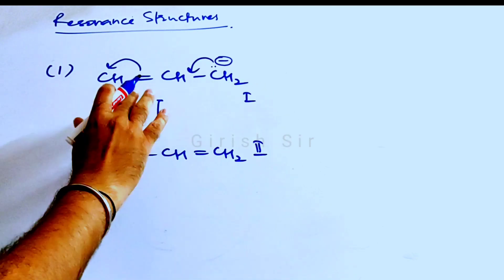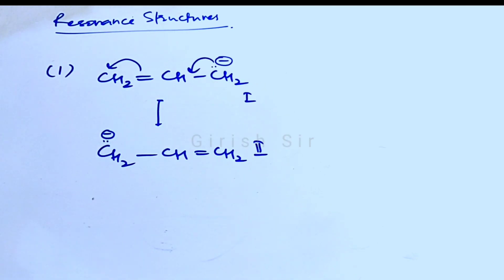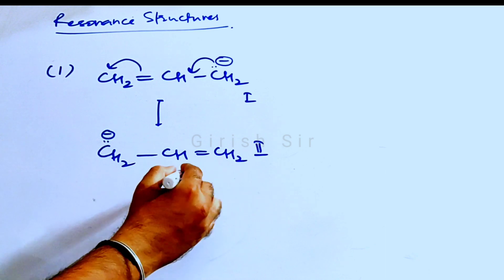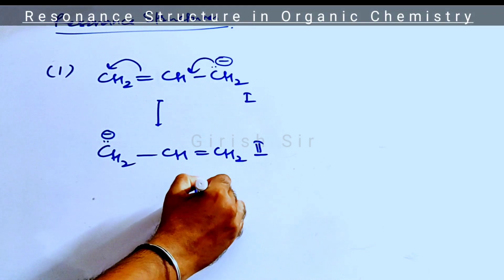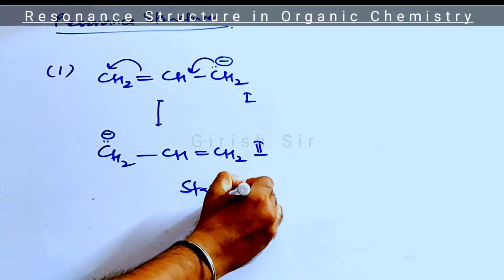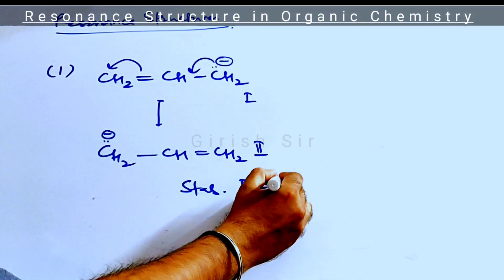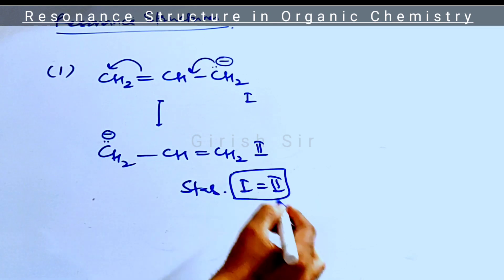If you look carefully, they look identical. If they look identical, they must have equal stability. So the stability of these two resonance structures is equal.